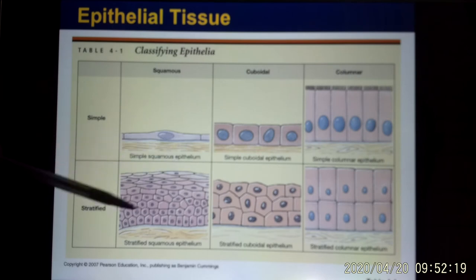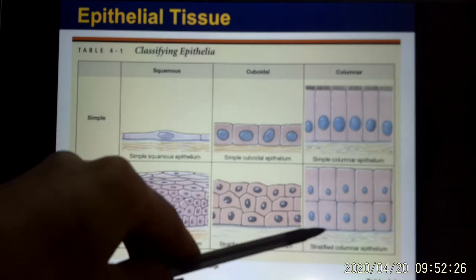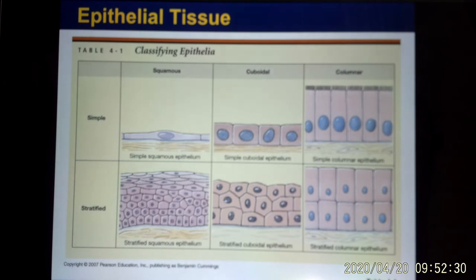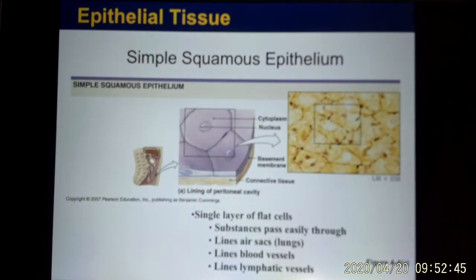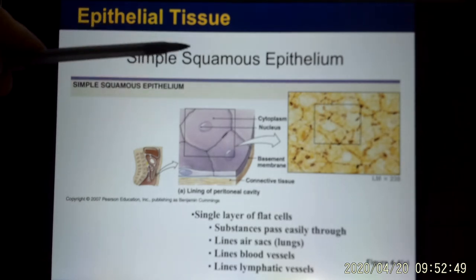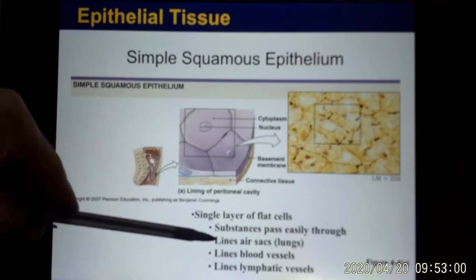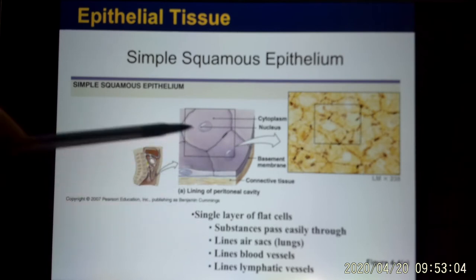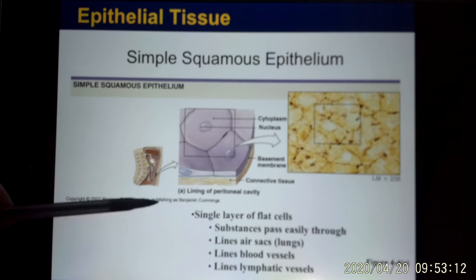For stratified cuboidal, there is a specific type called transitional. For stratified columnar, there is a special one called pseudostratified columnar. Your job is to know where to find each type. Simple squamous is one layer of flat cells used where simple diffusion is the main mechanism, like in the lungs — in the air sacs called alveoli — and in capillaries and lymphatic vessels.